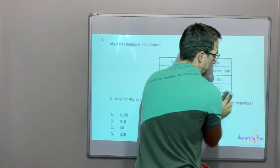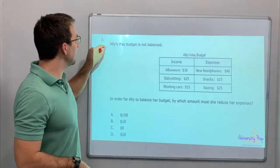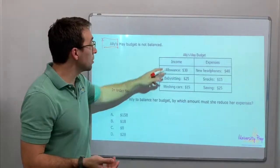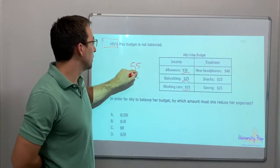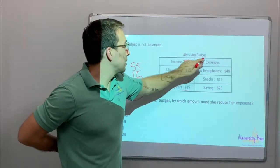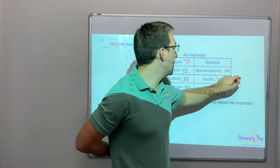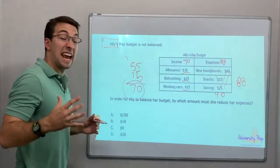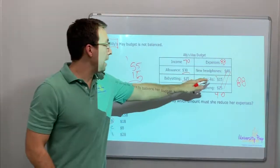Two more questions here. Allie's May budget for the month of May is not balanced. This is her income – three jobs she's got. 30 plus 25 is 55, plus 15 is $70. $70 is income. Expenses: 15 and 25 is 40, plus 48 is $88. She needs to find $18. In order to balance her budget, by which amount must she reduce her expenses? $18. $88 minus $70.